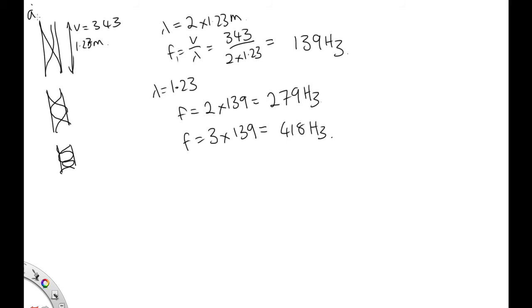OK, so that's part A. For part B, we're told it's now blocked at one end, so the first fundamental frequency will be where we've got a quarter of a wavelength in there. So lambda will be equal to 4 times 1.23 meters.